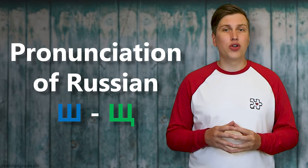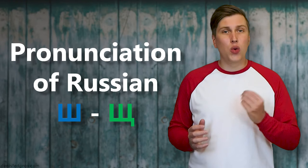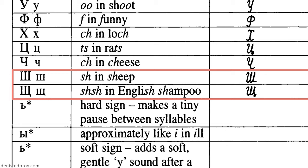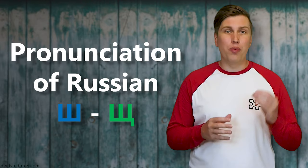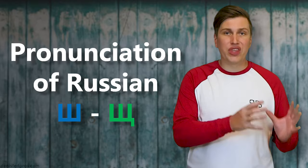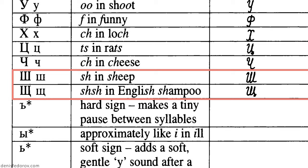For example, most Russian learners, when commenting on the difference between the Russian SHA and SHA, would say something like this: the Russian SHA is pronounced as an SH, and SHA is usually referred to something vague, like a SHCH or SHSH combination. And when they try to pronounce this SHSH as a sound, rarely it sounds like a Russian SHA. In this video I am going to address this issue, so by the end you'll know the exact difference between the Russian SHA and SHA and will understand how exactly to pronounce them.